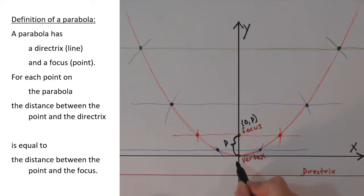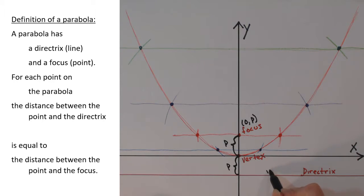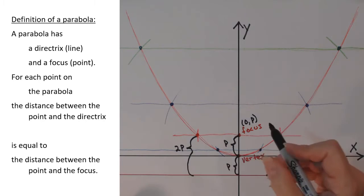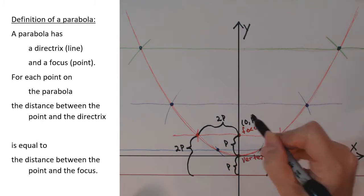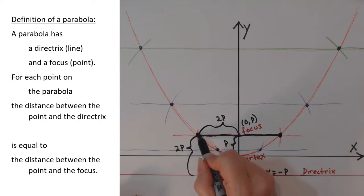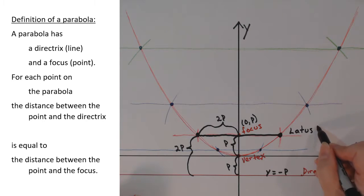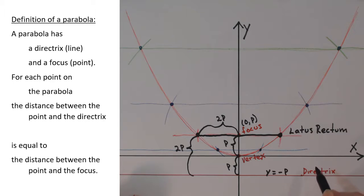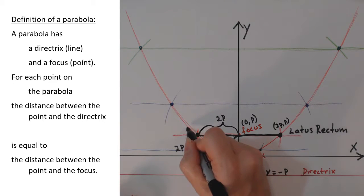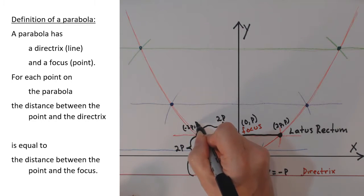If the vertex is p spaces away from the focus, it must also be p spaces away from the directrix. So the directrix is a horizontal line p spaces below the x-axis, giving it the equation y equals negative p. The point on the horizontal line that runs through the focus is 2p spaces above the directrix, so it must be 2p spaces out from the focus. There's another one on the other side with the same distance — 2p from the directrix and 2p from the focus. The segment that runs between these points is called the latus rectum: 'latus' means to the side, and 'rectum' refers to the right angle between the latus rectum and the y-axis. The point at the right end has coordinates (2p, p) and the point at the left end has coordinates (−2p, p).